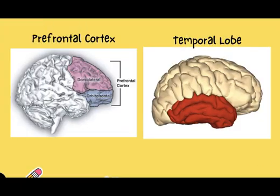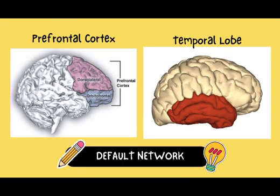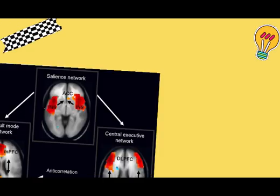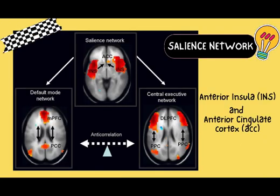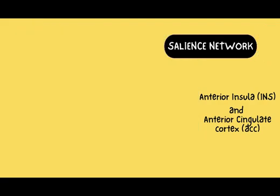The default network, located in the prefrontal cortex and temporal lobe, allows us to create pictures in our head — that's why it's also known as the imagination network. Meanwhile, the salience network, composed of the dorsal anterior cingulate cortices and anterior insula, acts as a sorting warehouse because it filters the important ideas.